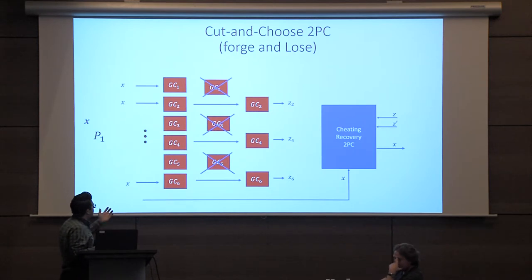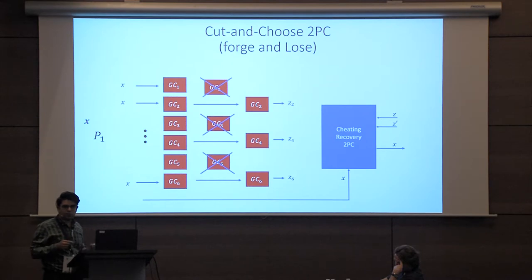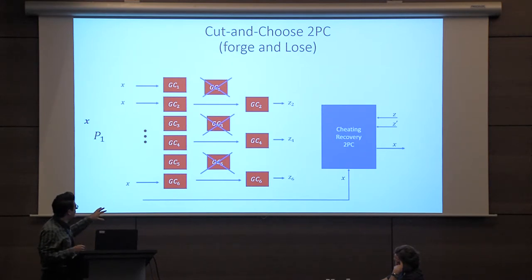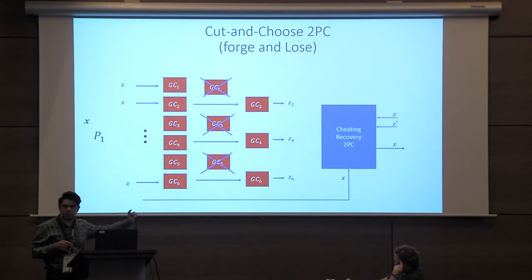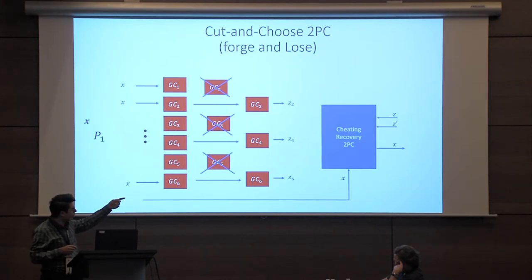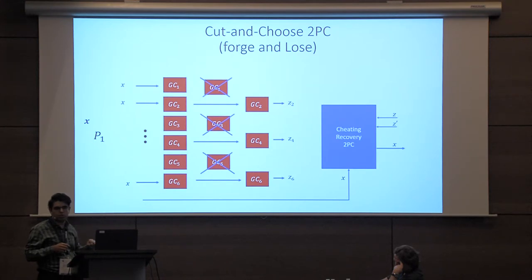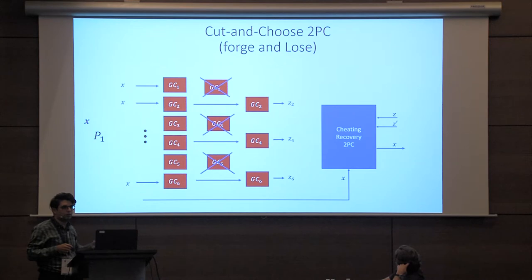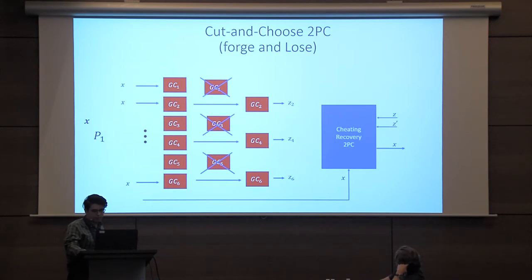Now we are interested in non-interactive — two-message — secure two-party computation. A lot of things are not obvious to do with just two messages. For example, many techniques have a separate 2PC just for the cheating recovery, so you have to do the original 2PC and the cheating-recovery 2PC, which requires multiple rounds of interaction.